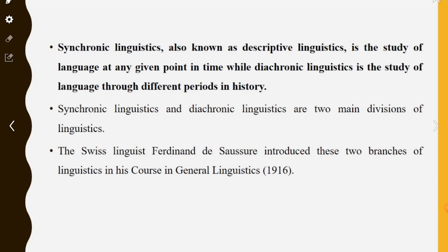While diachronic linguistics is the study of language through different periods in history. A long period is what we call diachronic. Study of language at any given point in time is synchronic. Diachronic linguistics studies language through different periods in history.